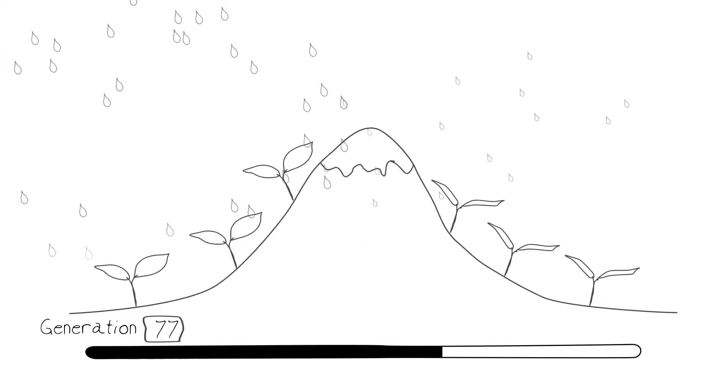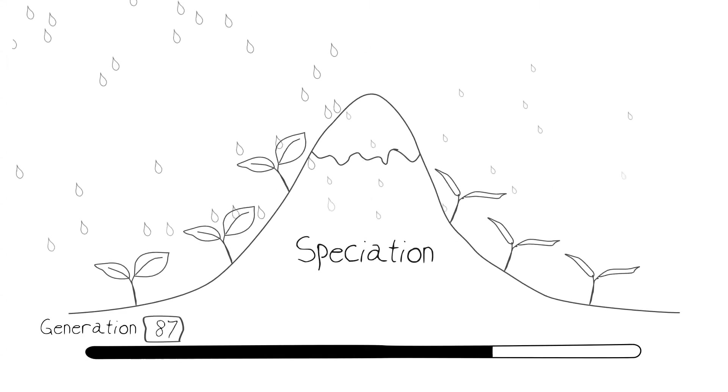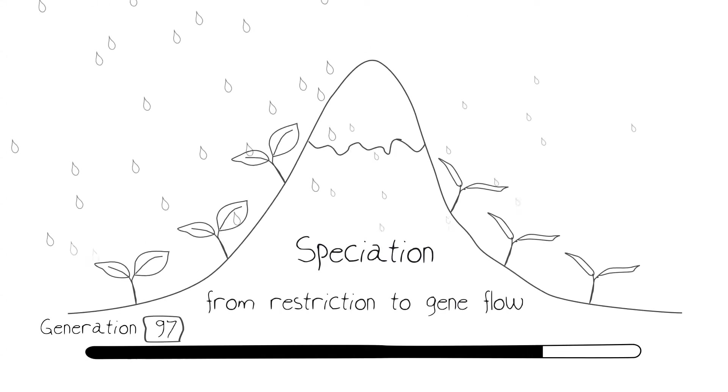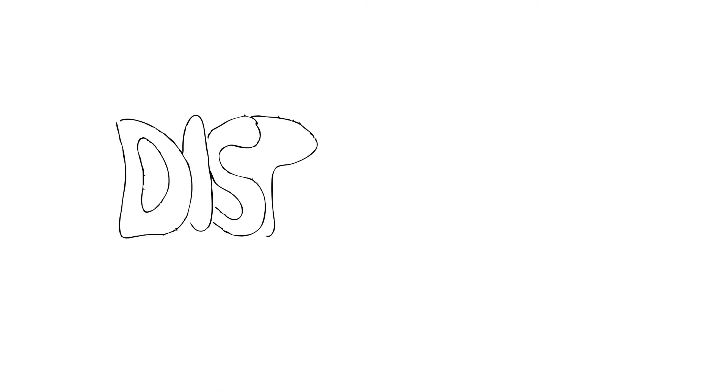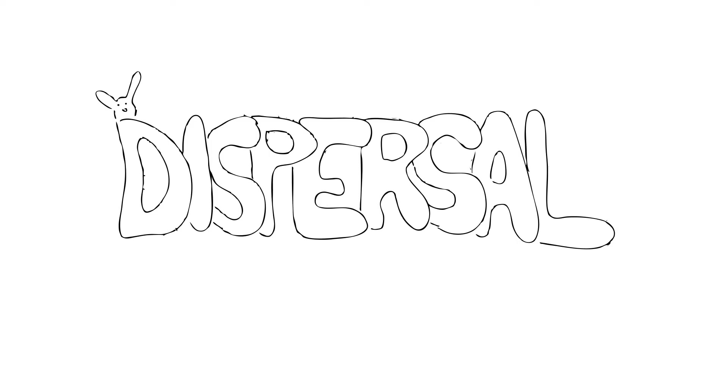However, what we'd like to focus on here is that there's another way to really accentuate the effects of restricted gene flow, and that's something called dispersal.